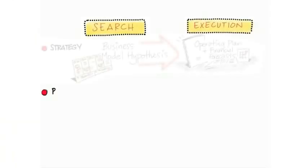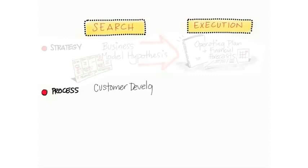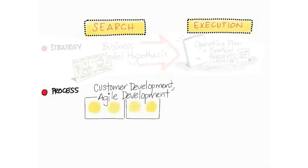So what this really means is that for process, instead of just going to execution first — hiring product managers, doing waterfall development, or maybe even agile nowadays — we're actually going to start with a customer development process coupled with some kind of agile engineering process. Which one you pick, I use XP as an example, but it could be whatever your favorite process is.